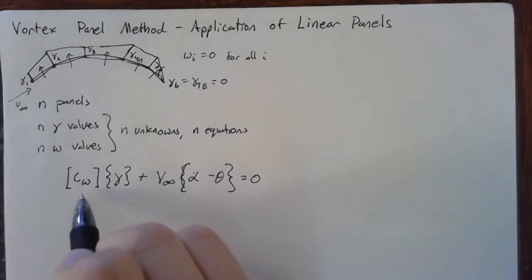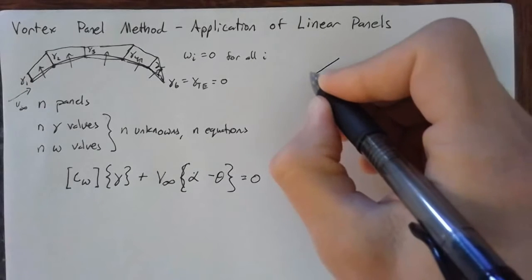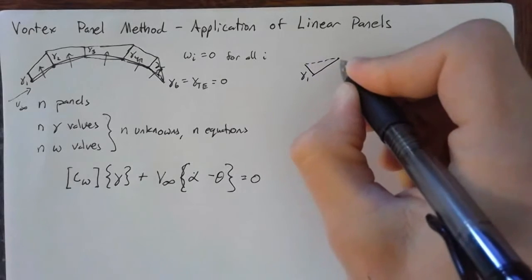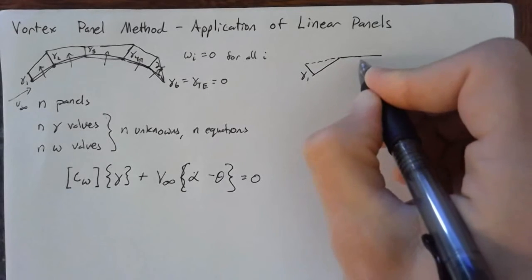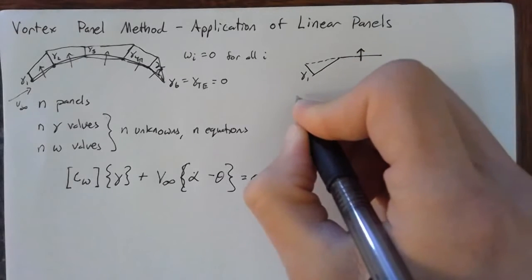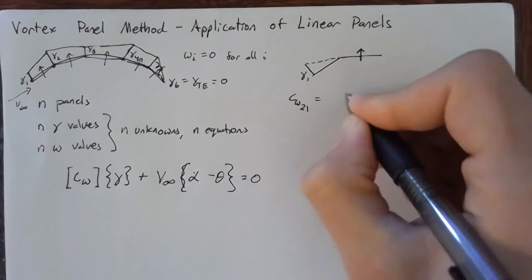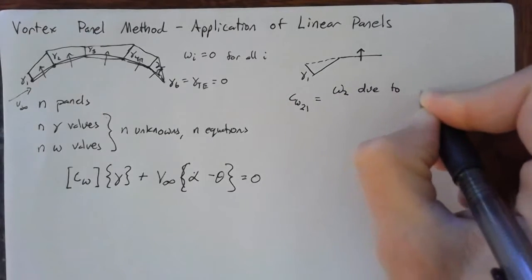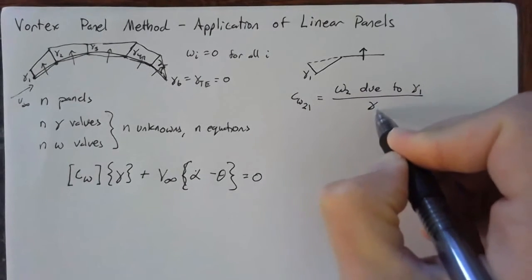So how do we actually find these upwash coefficients? So let's look at our first panel, and say that we have some gamma 1 here. So gamma 1, and it's linearly varying down to zero. And we'll have a second panel, where we're trying to calculate the upwash coefficient. So if you remember, we're saying that CW 2,1 is going to be equal to the upwash on panel 2 due to this gamma 1. And that's going to be divided by gamma 1.